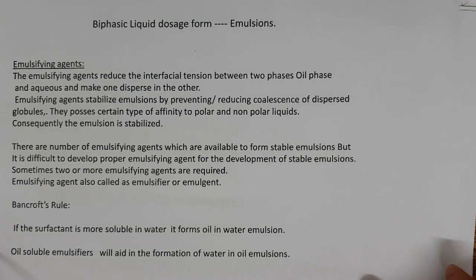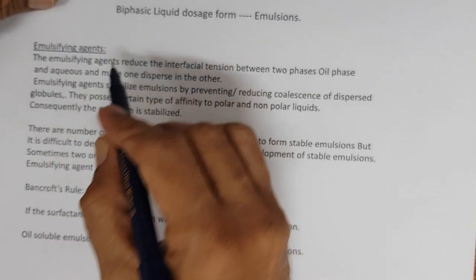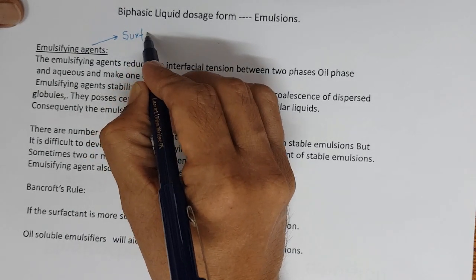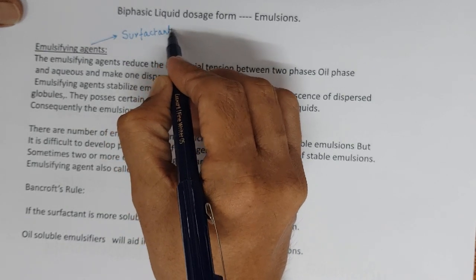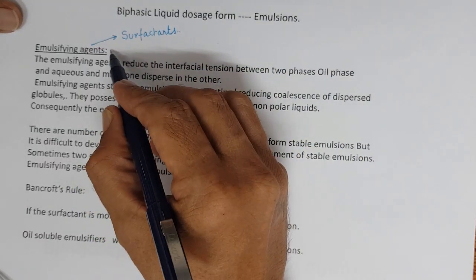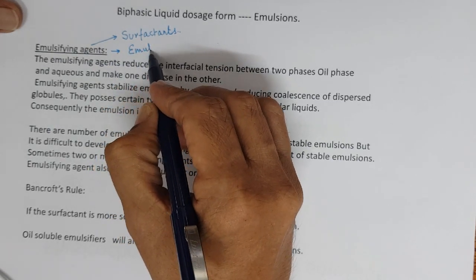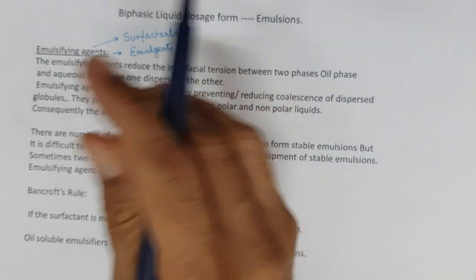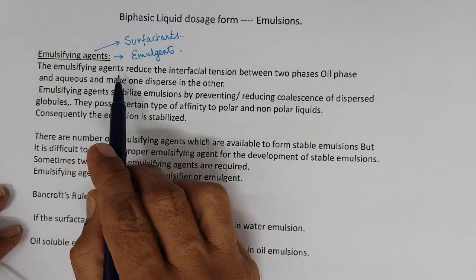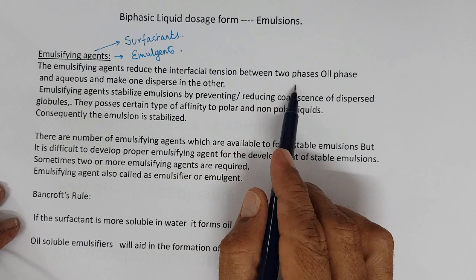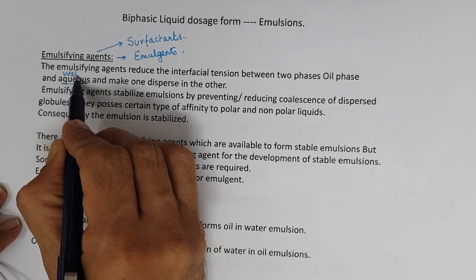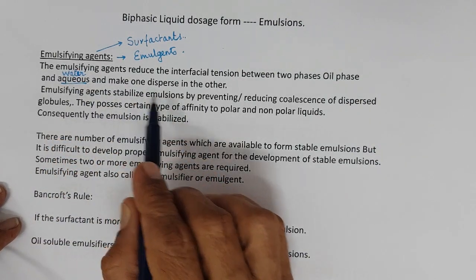What is an emulsifying agent? Emulsifying agents are mostly surfactants and are also called emulgents. Emulsifying agents reduce the interfacial tension between two phases — oil and aqueous — and make one disperse in the other.